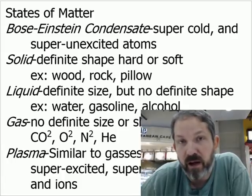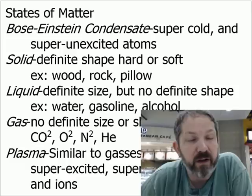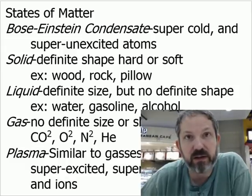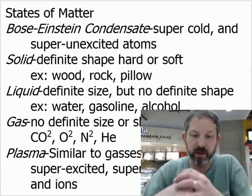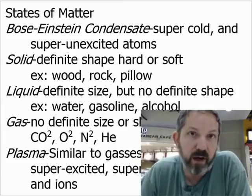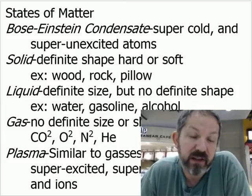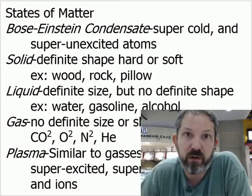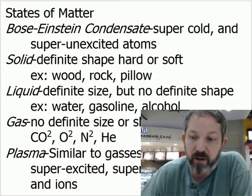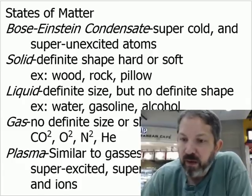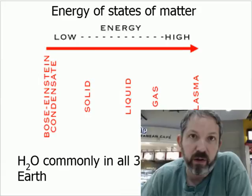We usually just think of states of matter as solid, liquid, or gas because we encounter those all the time on this planet. We don't encounter the Bose-Einstein condensate except under conditions of extreme cold, nor do we find plasma except under conditions of extreme heat. Plasma is kind of like a gas, except it's so super-heated that electrons are ripped off — it's just free-flowing, super-hot electrons and protons. It's mostly solid, liquid, or gas that we deal with.